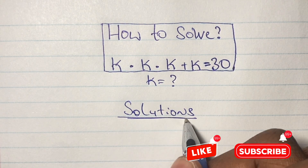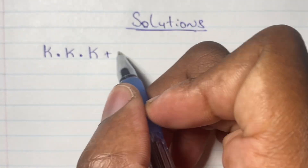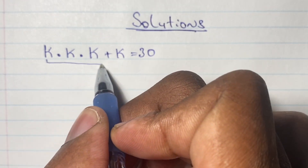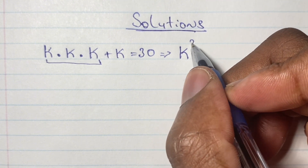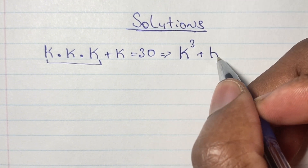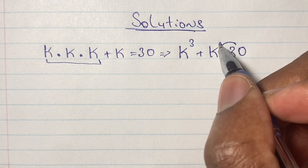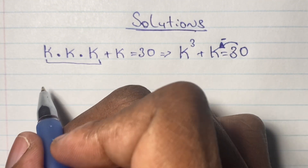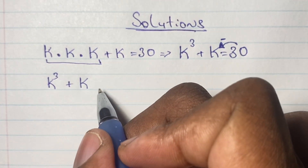Our equation states that k times k times k plus k is equal to 30. We start solving by multiplying k times k times k, which gives us k to the third, so k³ + k = 30. We then bring the 30 to the left side of the equation — since it's positive, it becomes negative — giving us k³ + k - 30 = 0.